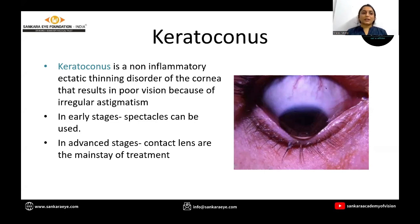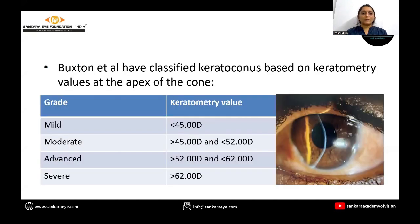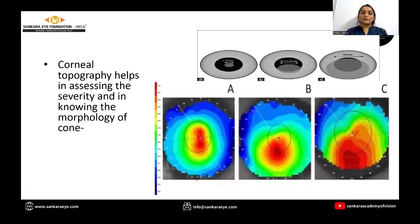In early stages spectacles can be used, but in advanced cases contact lenses become necessary. Buxton et al. classified keratoconus based on the values at the apex of the cone into mild, moderate, advanced, and severe. Corneal topography can also be helpful in assessing the severity and knowing the morphology of the cone, divided into nipple, oval, or globus cone.